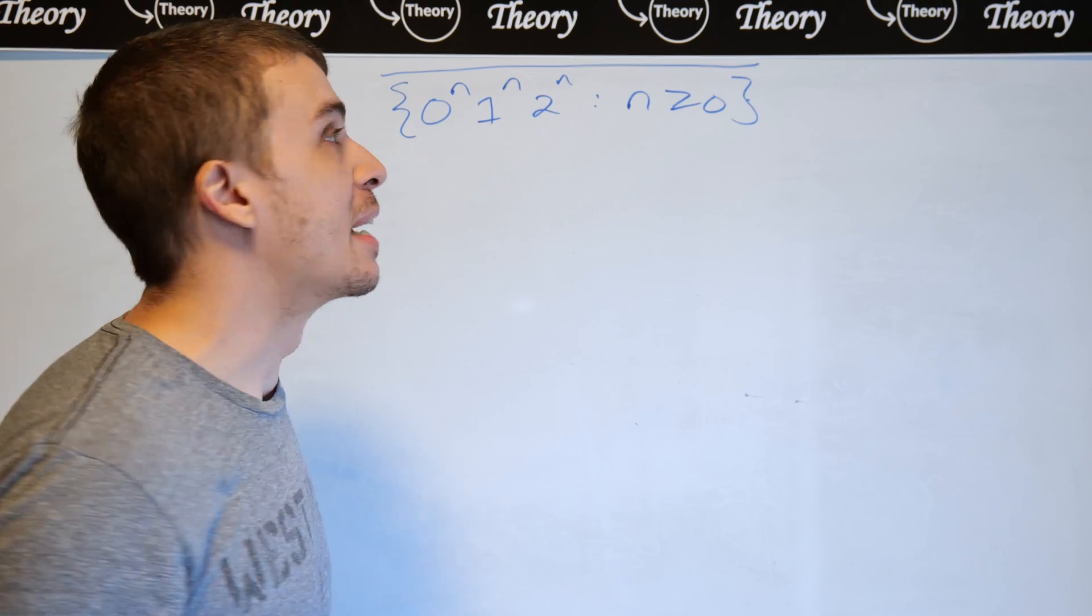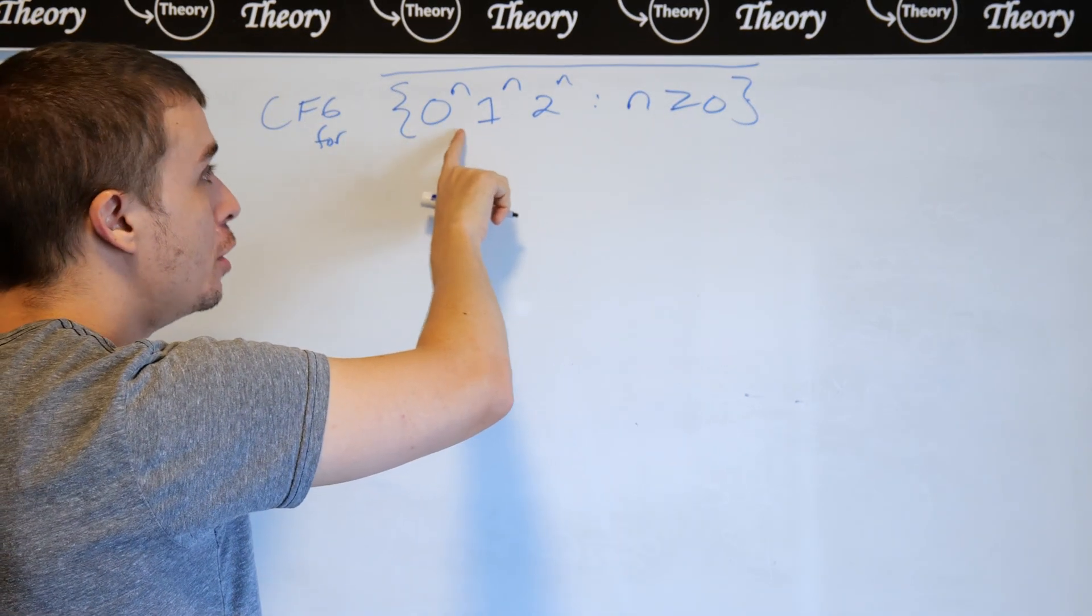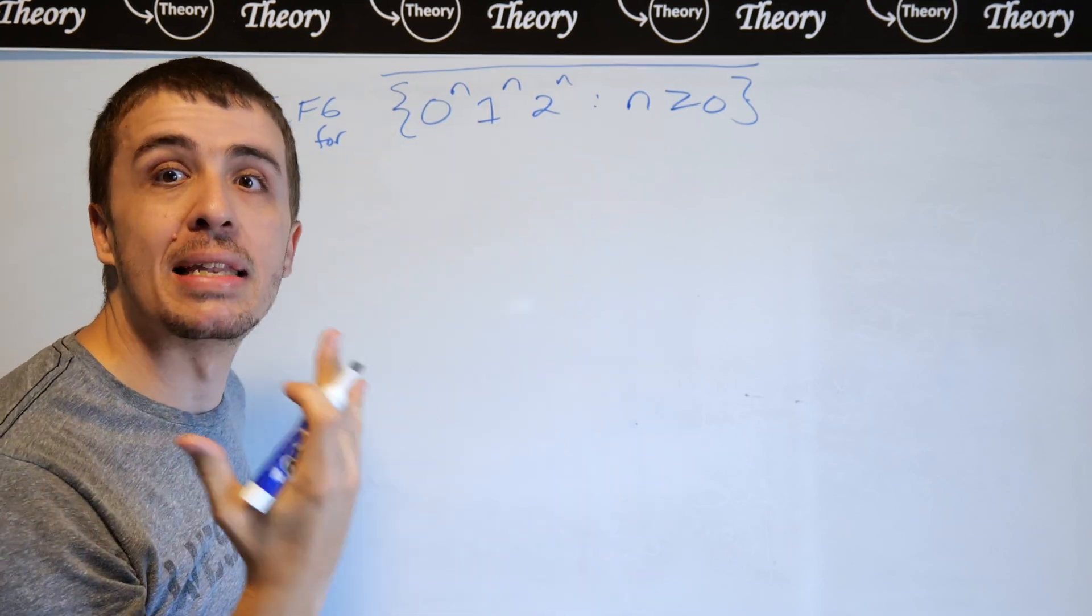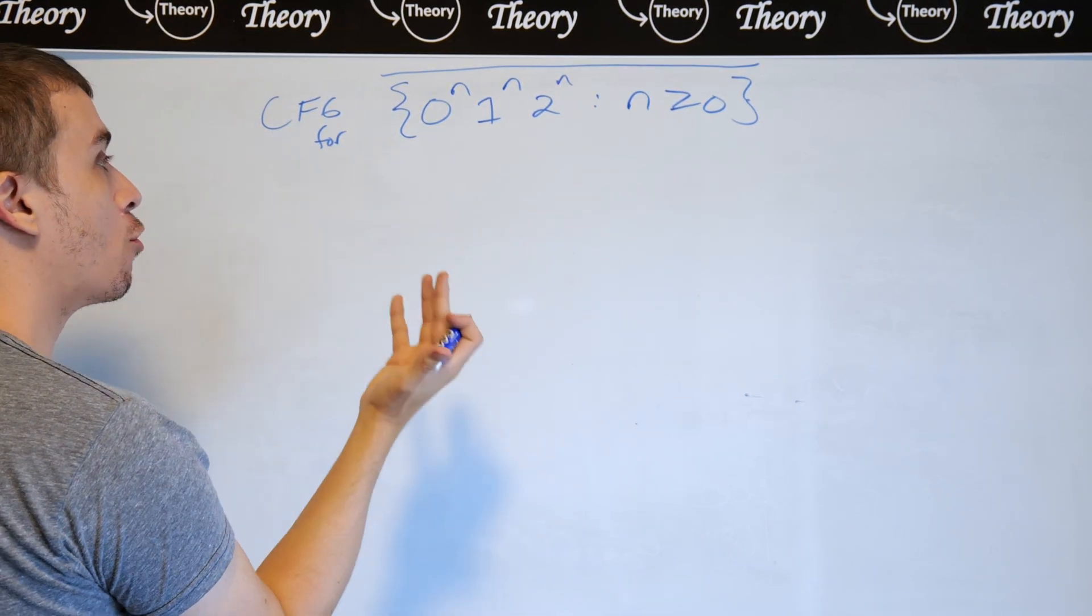So let's consider what the strings look like. Well, every string in the original language has some 0s, 1s, and 2s, and it's the same number of each. So how can we actually make a grammar for them?